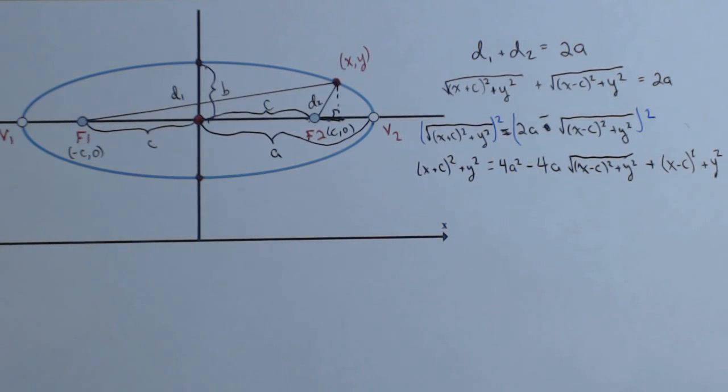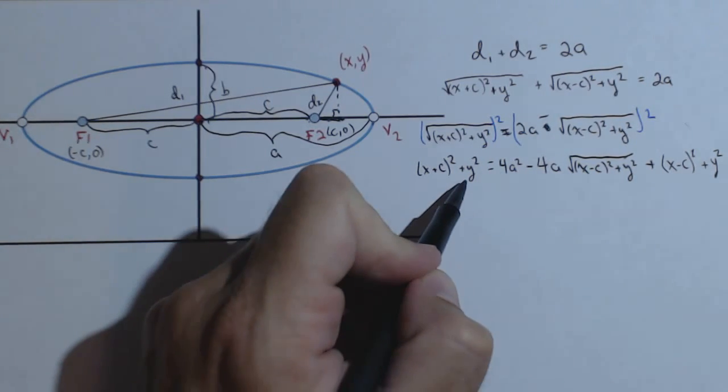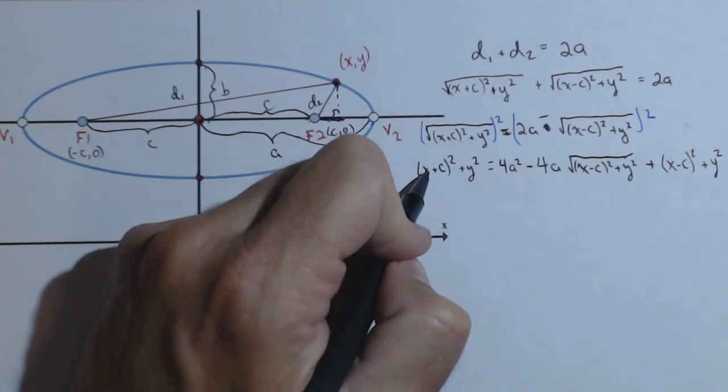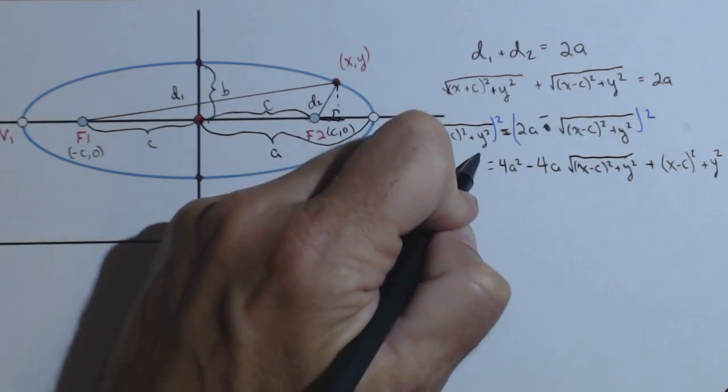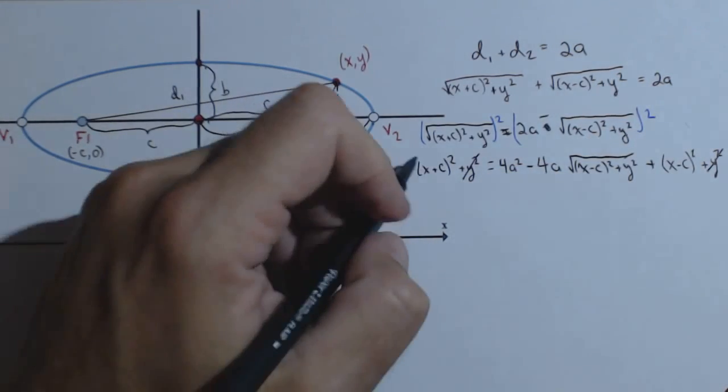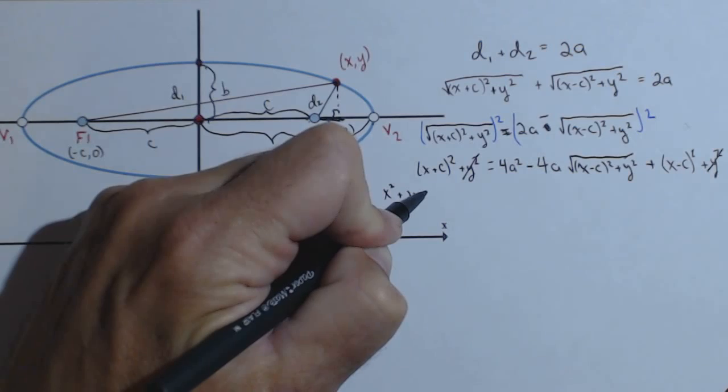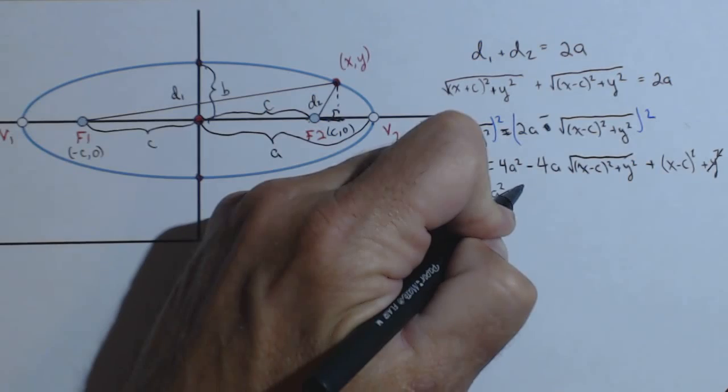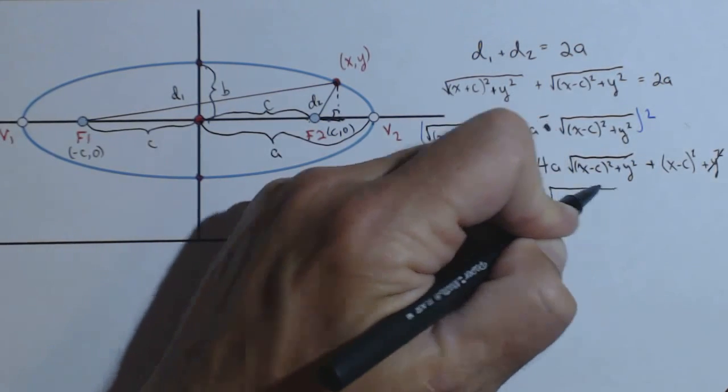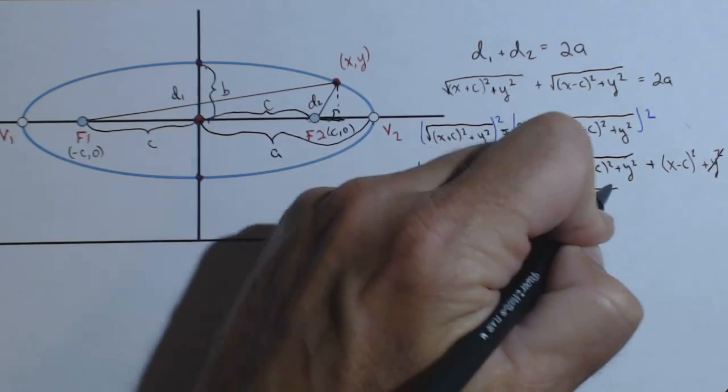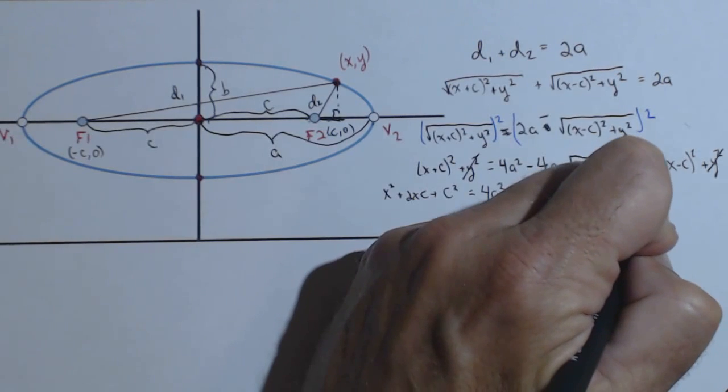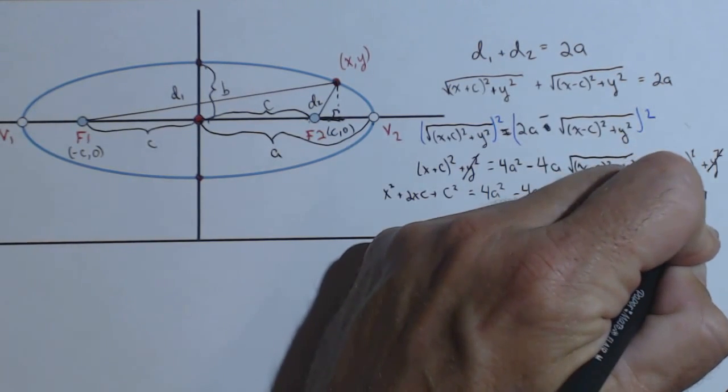Move that over so you can see the whole thing. Now, what we're going to do, if there's anything we can cancel, we'll go ahead and do it. So right away, I see, let's do a little bit of simplifying because we're going to have to get rid of this radical as well. So let's see what we can get rid of. Foiling these out, I can cancel out the Y squareds. I see that. And I'm going to foil these out. So I'm going to have X squared plus 2XC plus C squared equals 4A squared minus 4A times the square root of X minus C, the quantity squared, plus Y squared, plus, this is going to get foiled out, X squared minus 2XC plus C squared.